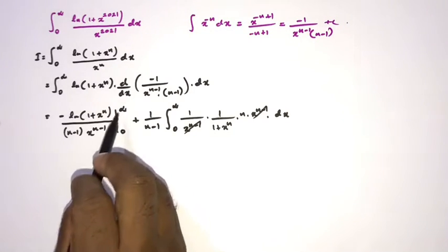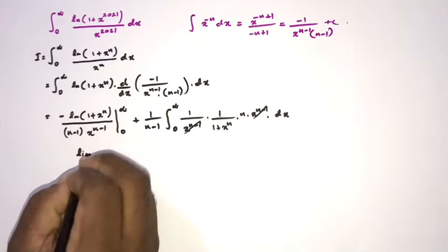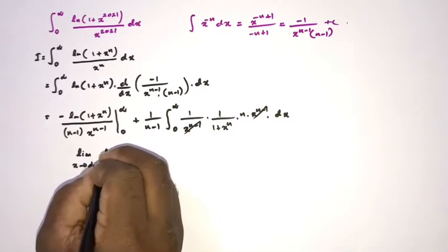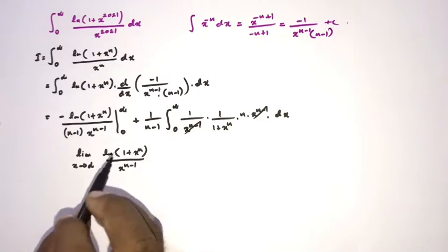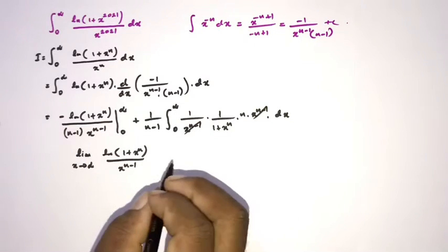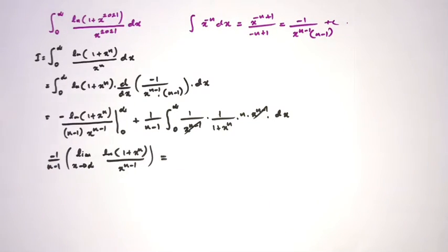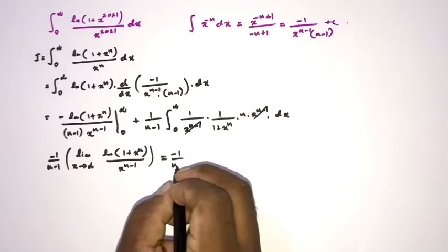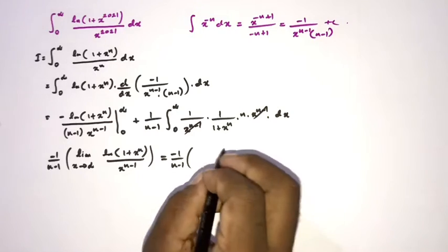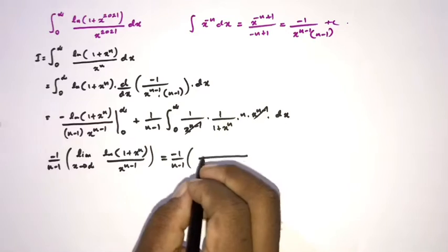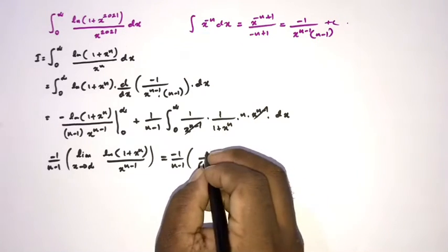Now to handle the boundary term properly, we take the limit as x approaches infinity of ln(1 + x^n) / x^(n-1). The factor -1/(n-1) is constant. Applying L'Hôpital's rule, the derivative of the numerator is [1/(1 + x^n)] · n·x^(n-1).